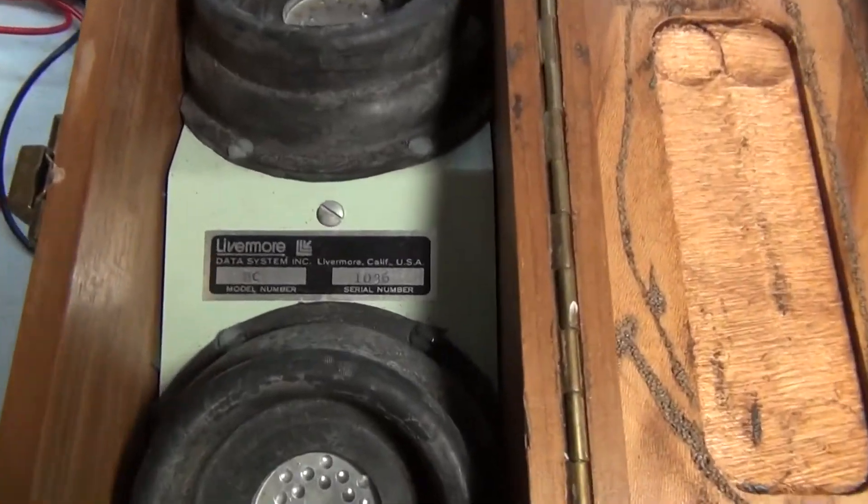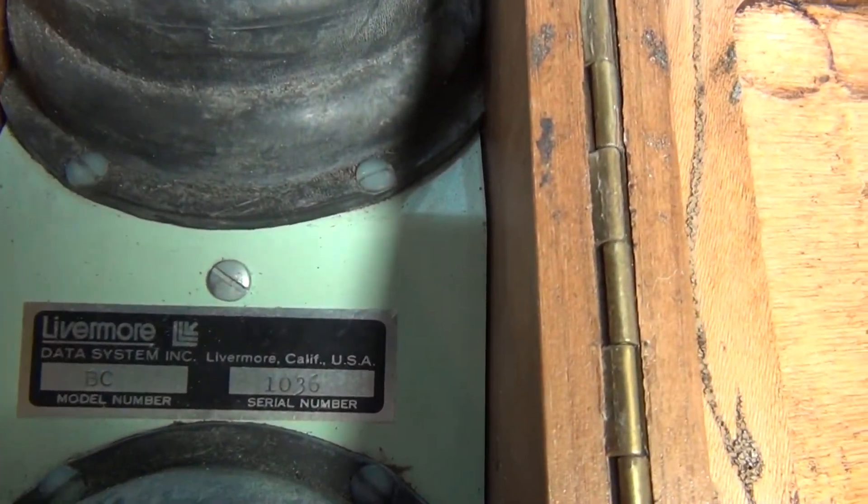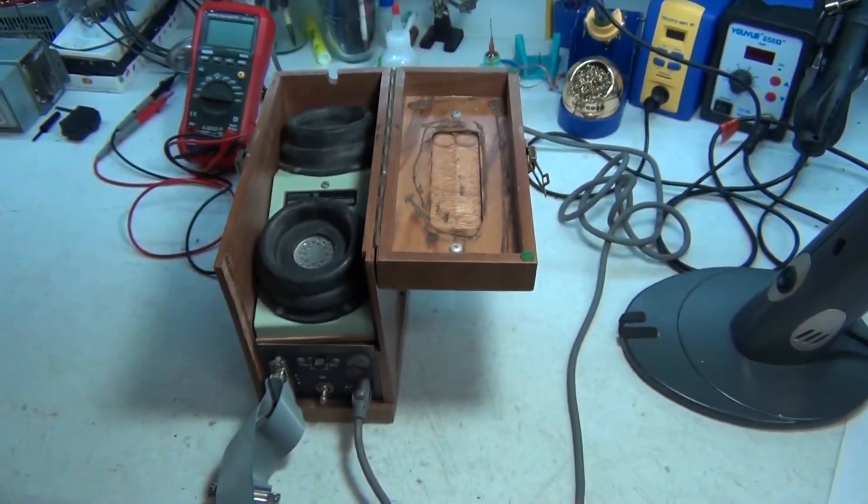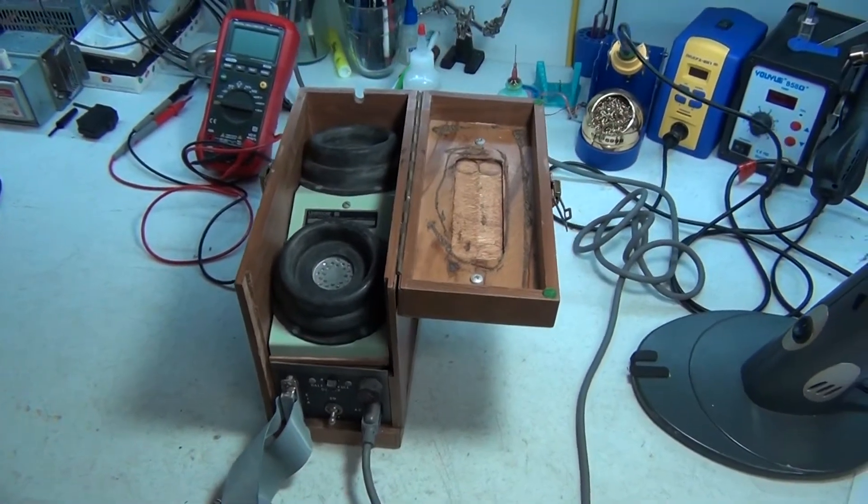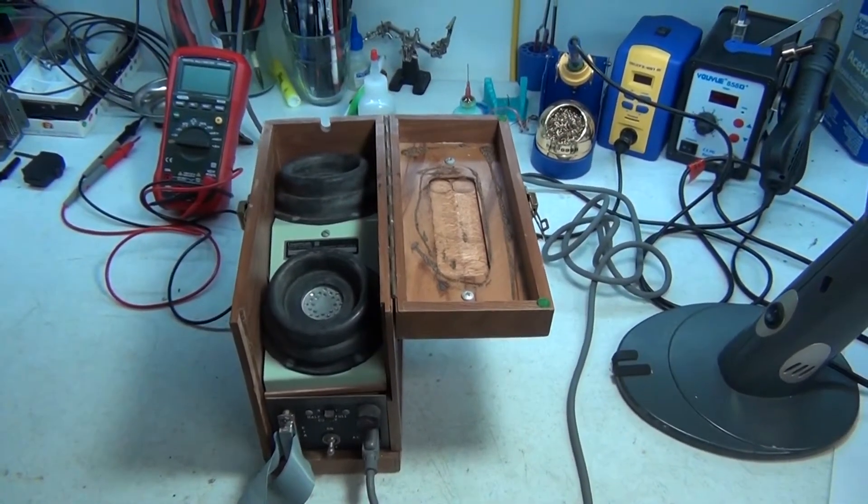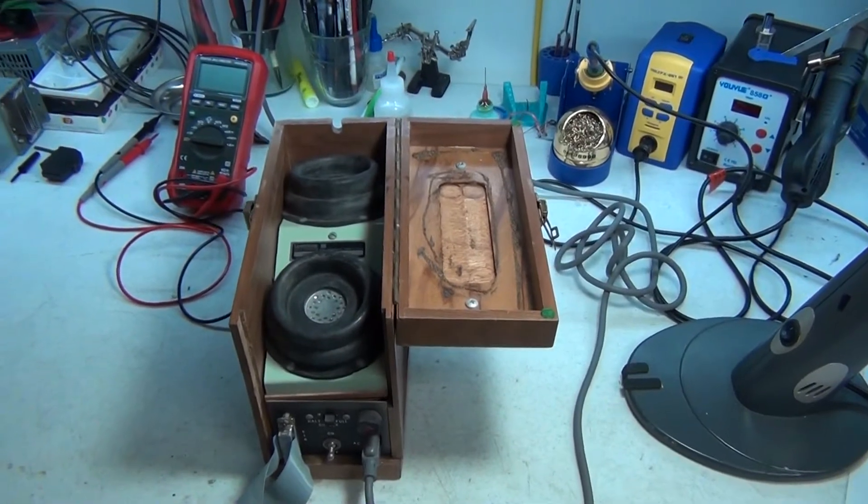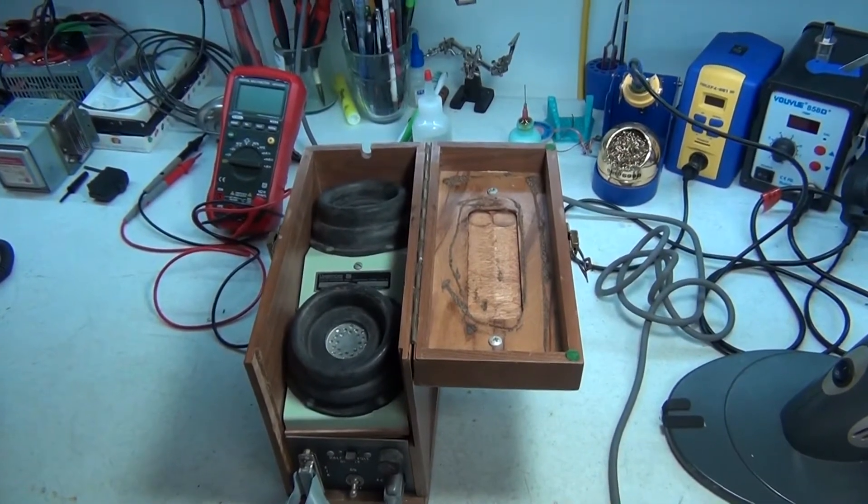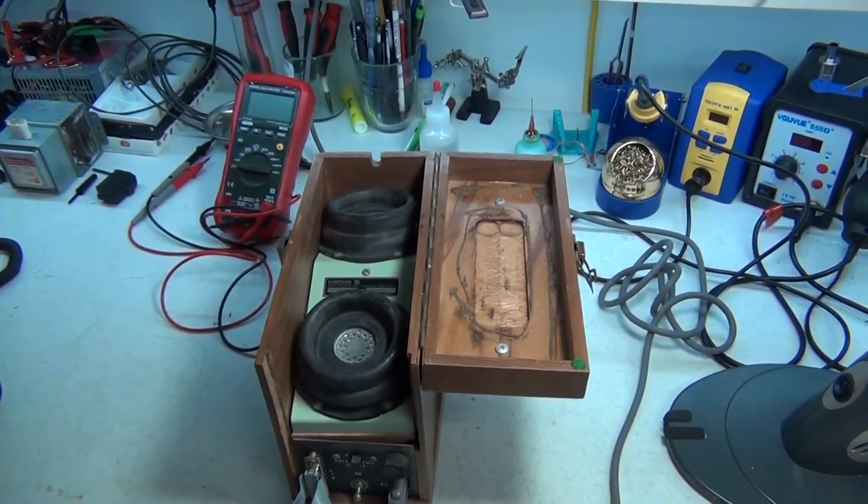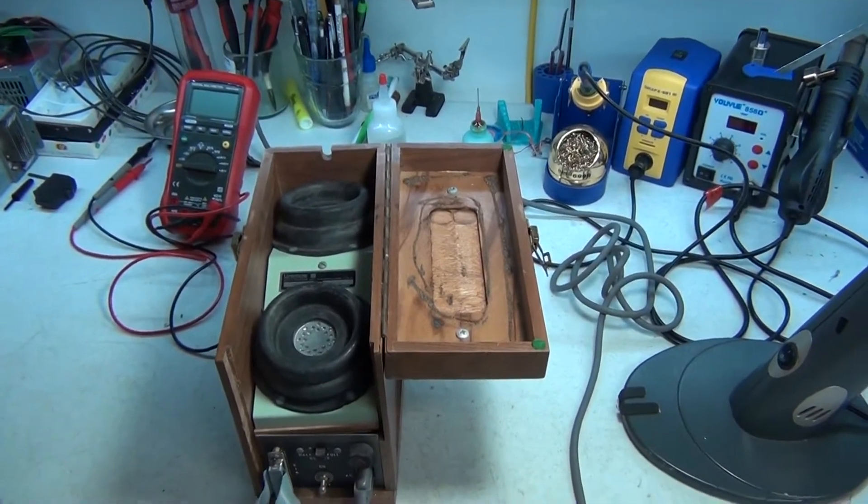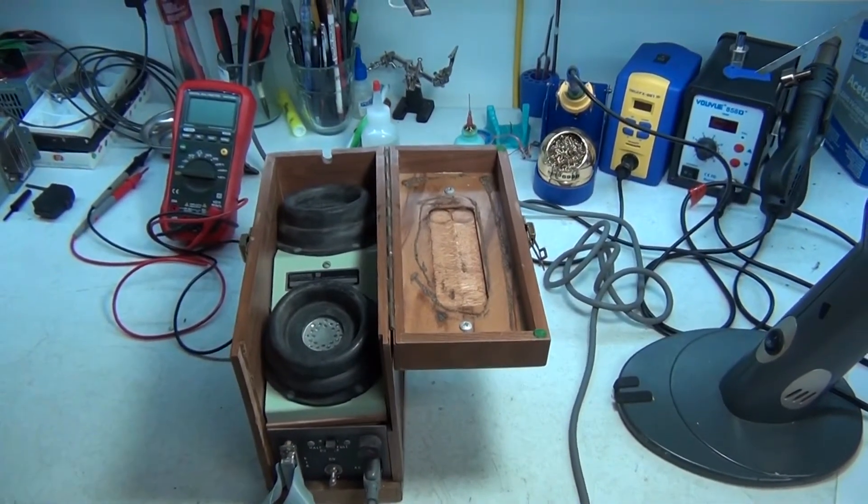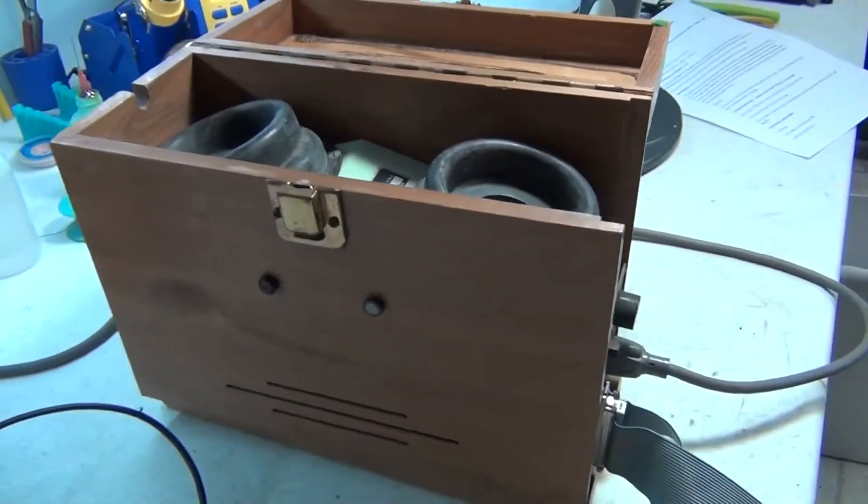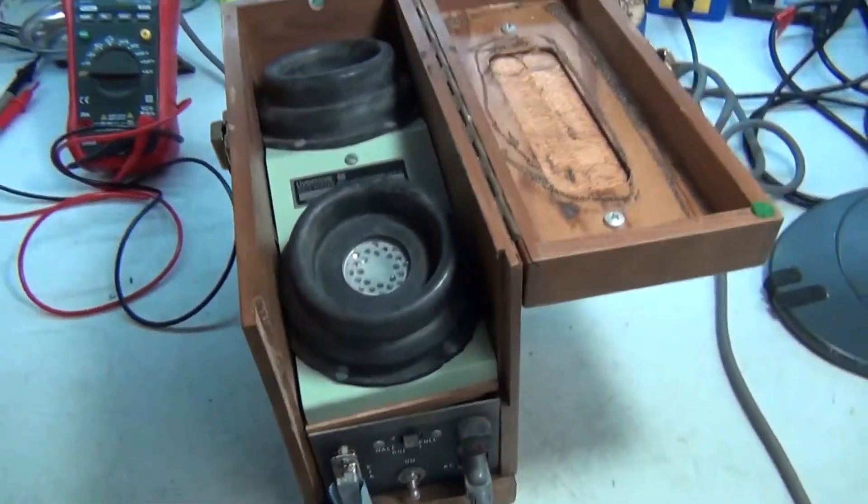The interesting thing is, this is actually labeled as a BC but I couldn't find any data on the BC. Found the model A and actually found a schematic for a model A. But looking at some pictures at the computer history museum, this appears to be actually a model B dated in 1965. The C is completely different and the A does not have the same configuration with those lights.